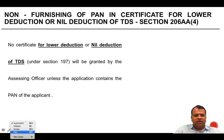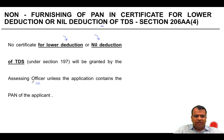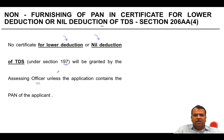Regarding non-furnishing of PAN in a certificate for lower deduction or nil deduction of TDS: if you have a certificate for lower deduction or nil deduction under section 197, no such certificate will be granted by the Assessing Officer unless the application contains the PAN of the applicant. This means if you want a certificate under section 197, it is mandatory to include your PAN number in the application. If it is not done, you will not get a lower deduction certificate.